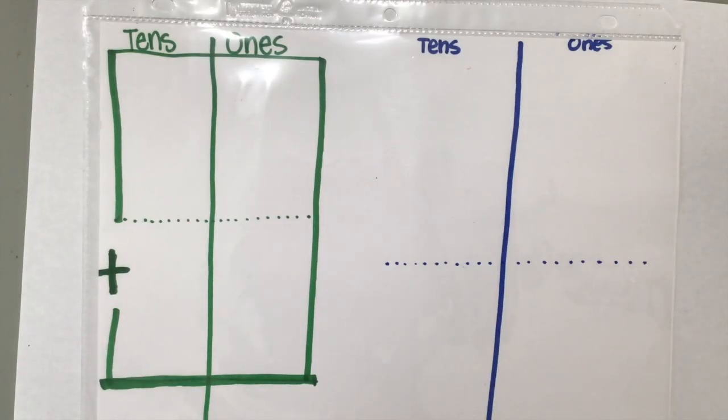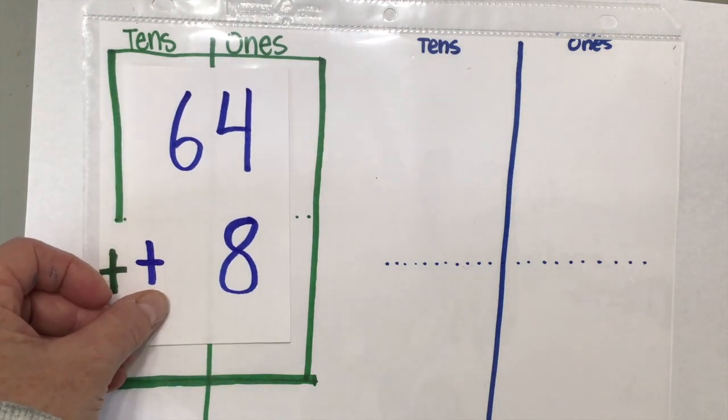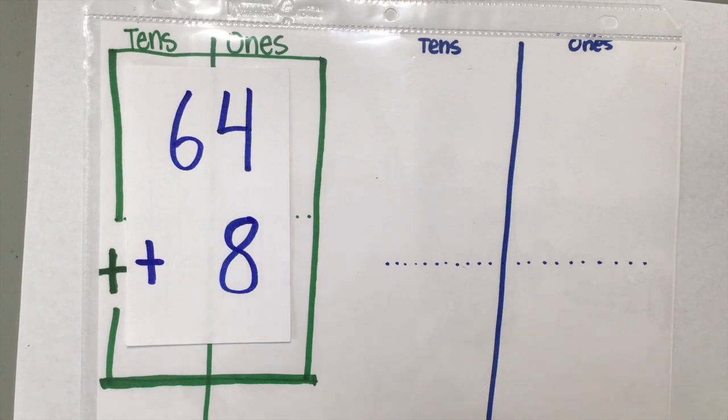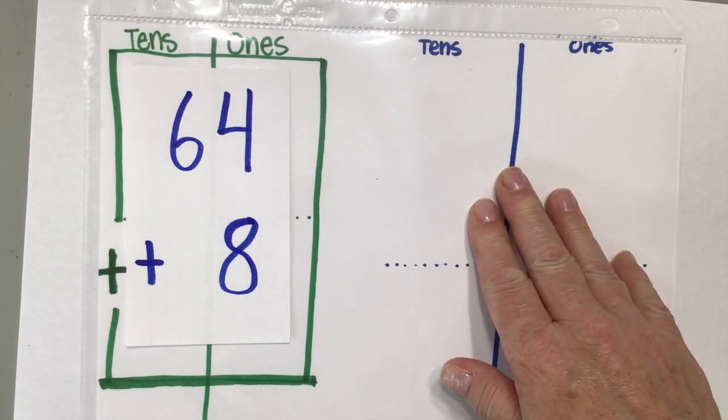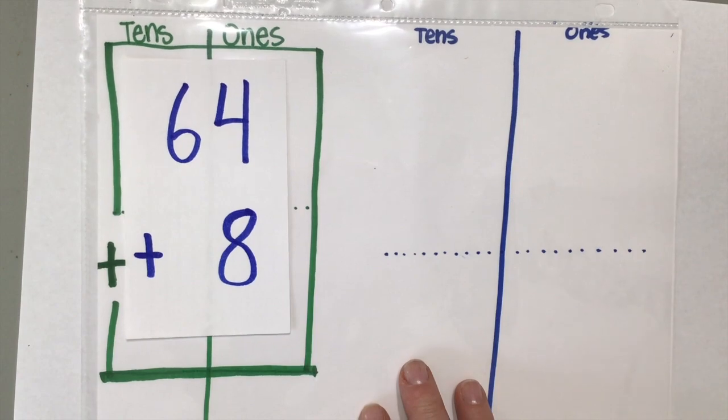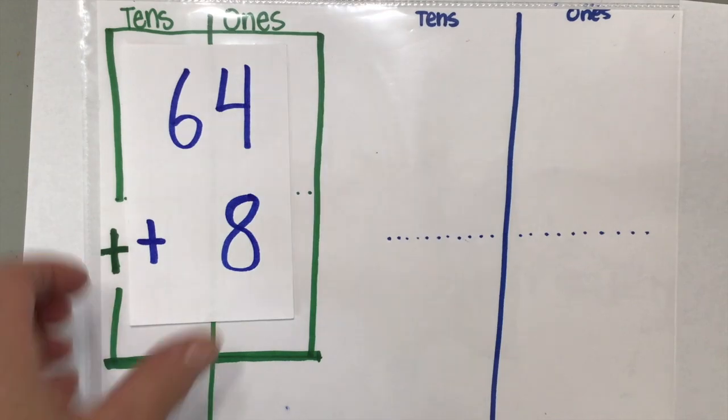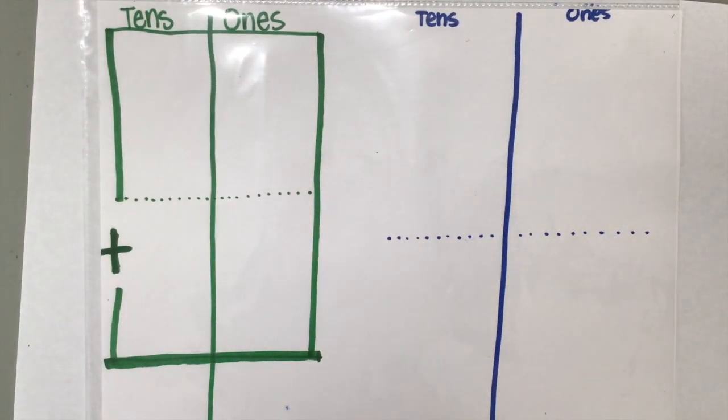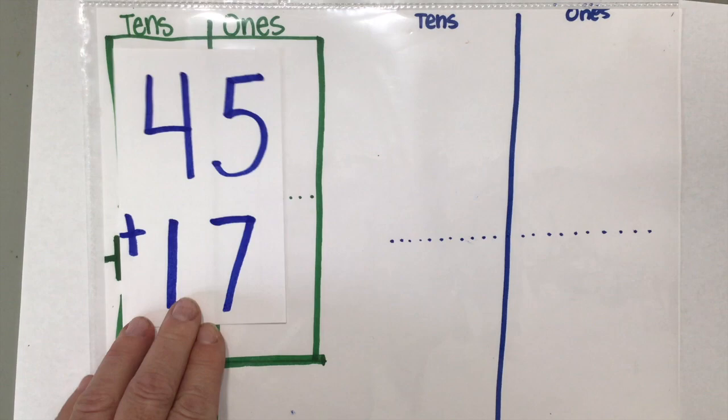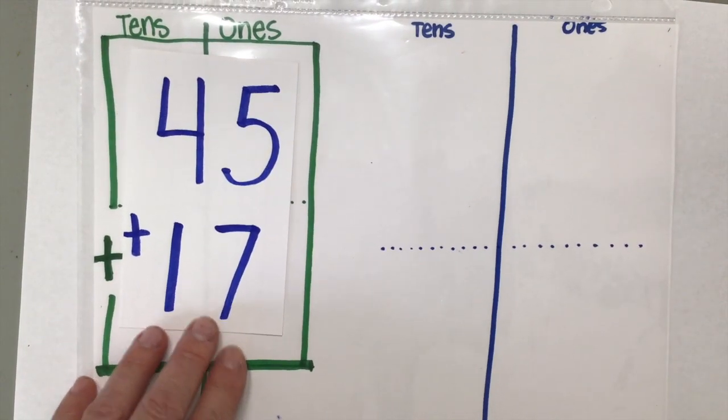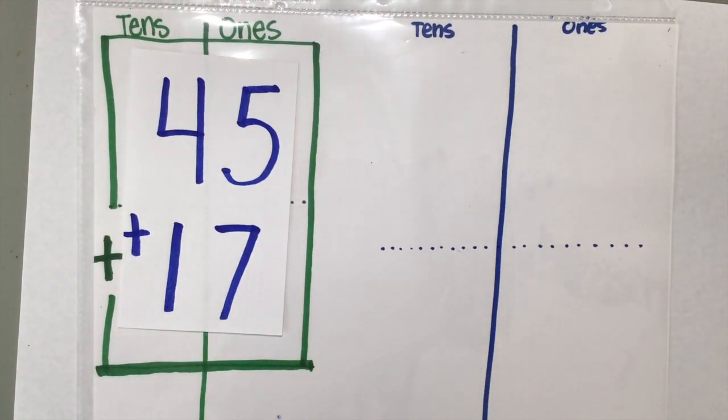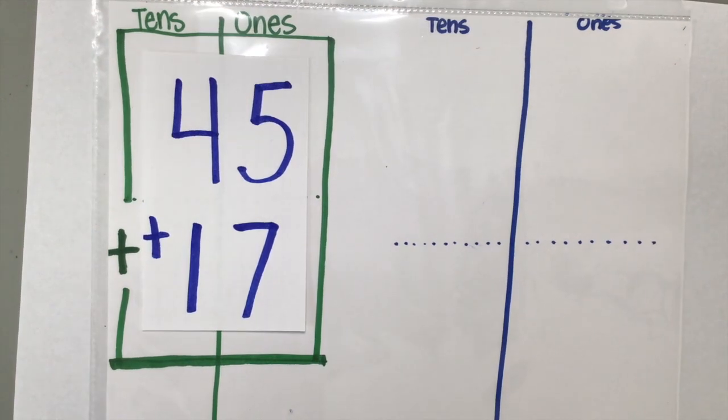So I'm going to give you two more problems that I'm going to have you complete on your own as your practice for today's lesson. The first problem you're going to complete on your own is 64 plus 8. So you'll want to build it and also write your numbers. The next problem, 45 plus 17.